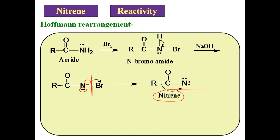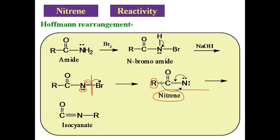Now this intermediate further undergoes rearrangement. The alkyl group migrates towards the electron-deficient nitrogen. When the bond breaks, there is formation of a new bond between the alkyl group (R group) and nitrogen. This electron pair again forms a bond between carbon and nitrogen, and we get the intermediate R–N=C=O, which is nothing but the isocyanate. That intermediate is called isocyanate. Nitrene on rearrangement converts into isocyanate.